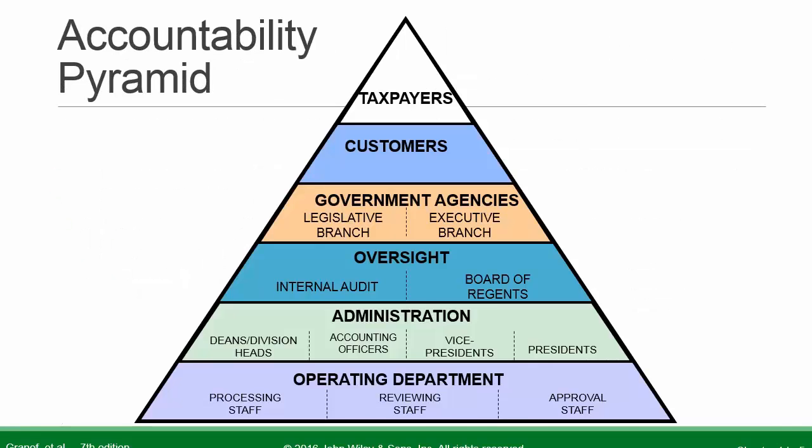Let's look at the accountability pyramid. We start at the bottom with the operating department, then the administration — getting the job done. Then we look at oversight: internal audit, the Board of Regents, elected officials, government agencies, legislative and executive branch, customers, and accountability. As we go up the pyramid, accountability narrows up to the taxpayers, but every layer of the pyramid is a layer of accountability.